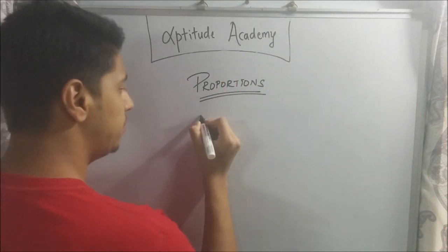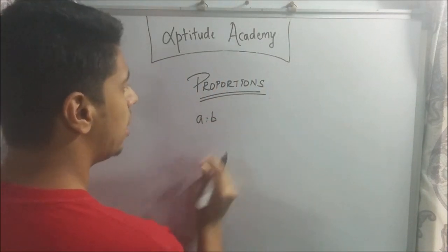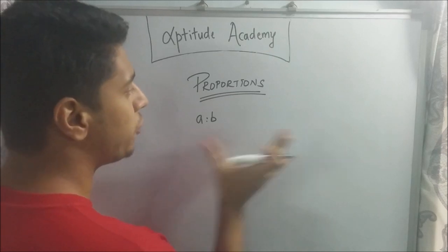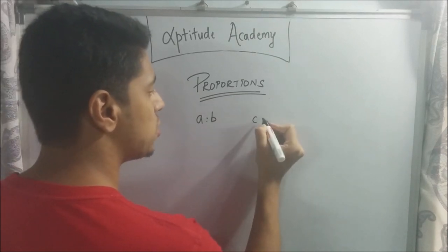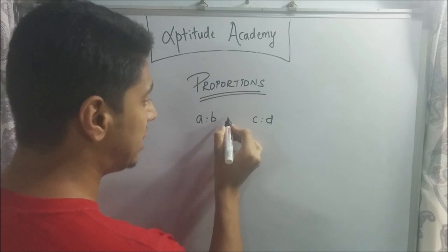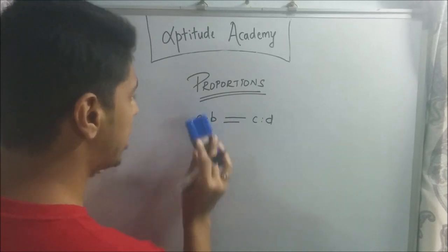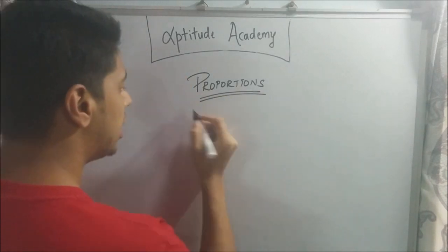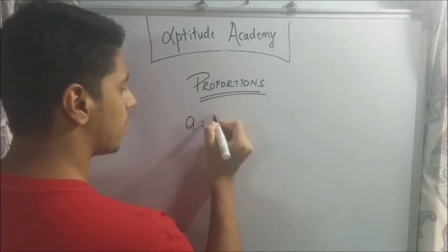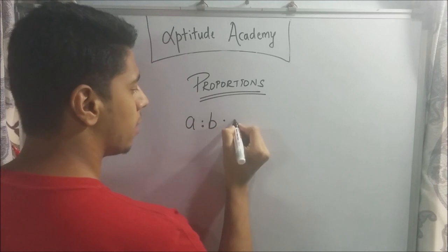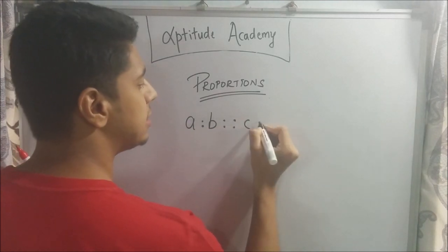Now that you know what ratios are, let's look at what are proportions. A ratio will be A is to B. A proportion basically is the equality of two ratios. So, suppose you have another ratio C is to D, and you say that both of these are equal to each other, that is a proportion. The accepted notation for this is what you must have seen in many textbooks. You will see A, then two dots, B, then four dots, C, then two dots, D.